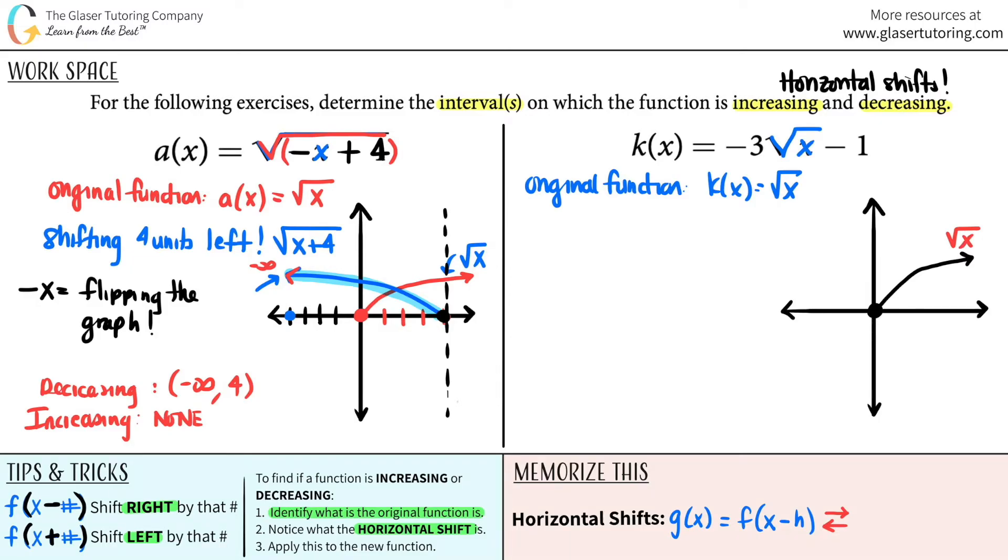Now take note as to any horizontal shifts. Remember your horizontal shifts have to be inside the parentheses of where the x value is. But over here, the only thing that is being square rooted is just the x. This minus one is not part of a horizontal shift. It's actually a vertical shift. So in this case, we don't have any horizontal shifts, right?